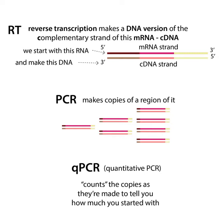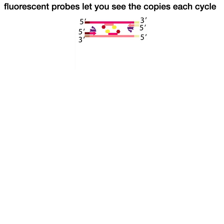You might think: why are we doing this copying? Well, even though there are copies to begin with, there's not enough to actually visualize. So how are we going to visualize this? We use fluorescent probes. Fluorescence is where molecules, when you shine a light of one wavelength at them, give off light at a different wavelength. The primers specify what stretch of DNA gets copied in the PCR step.